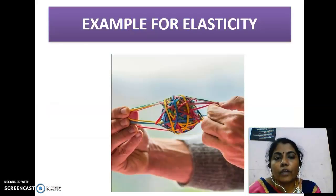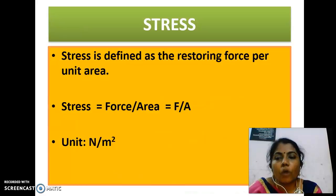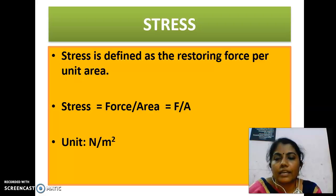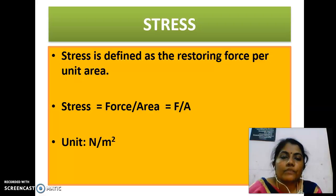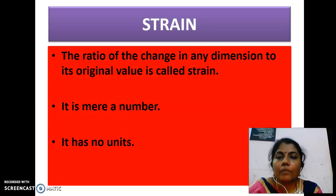A well-known example of elasticity is rubber. Next we can see about stress. Stress is defined as the restoring force per unit area. Suppose a force F is applied normally to the area of cross-section A of a wire; the stress is equal to force per area, that is F by A. The unit of stress is Newton per meter square.